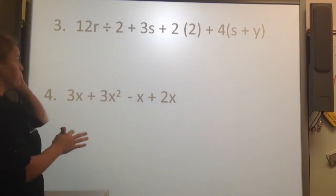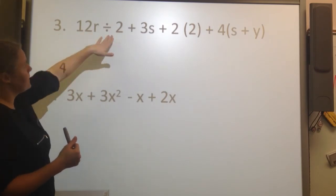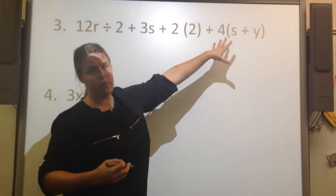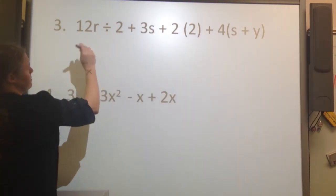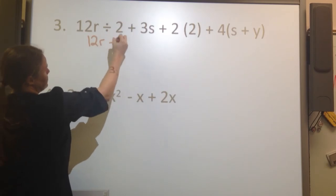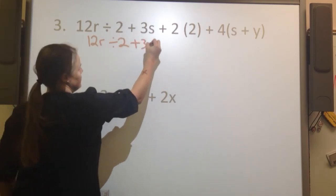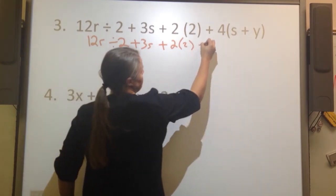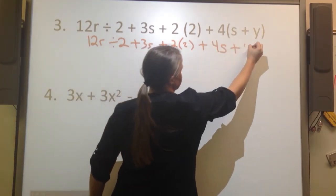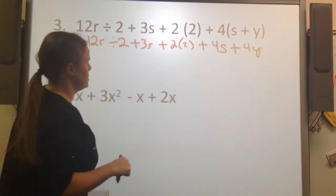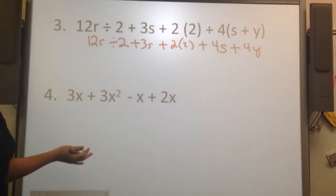A lot going on. So this time, we have 12r divided by 2, some addition, multiplying, distributing property. So I'm going to rewrite the problem again so that I can get my distributive property done. So 12r divided by 2 plus 3s plus 2 times 2 plus 4s plus 4y, because I'm distributing that 4 to both of those parts. So now I've got some multiplying and dividing to do.